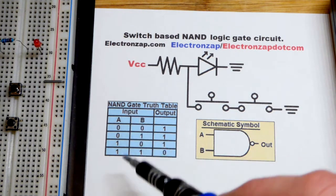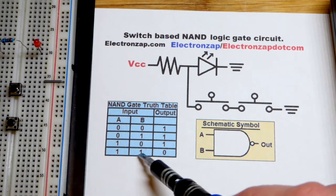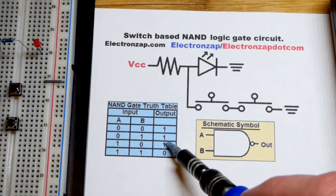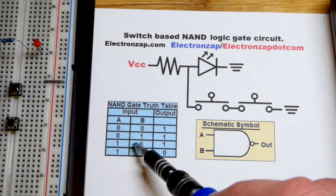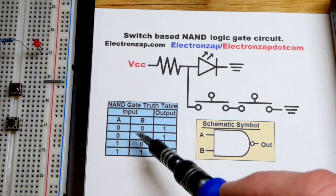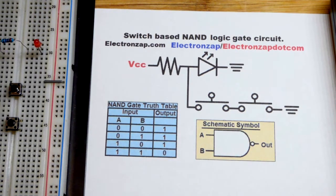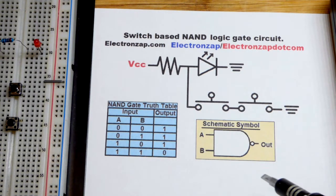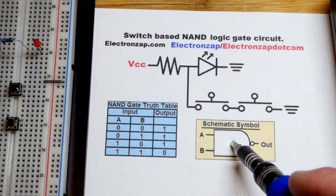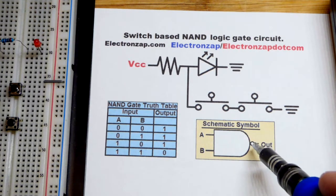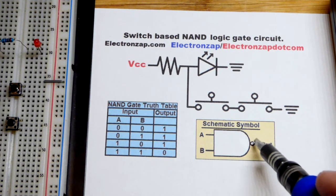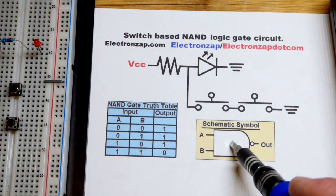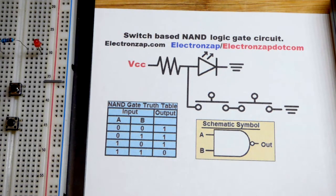With the NAND gate we need all the inputs high for the output to be low. The output is high if any of the inputs are low, so it's the opposite of the AND gate. There is a quick look at the schematic symbol. It's the AND gate with a little dot at the output, and the dot means that it is inverted, so it's the opposite of an AND gate for the most part.